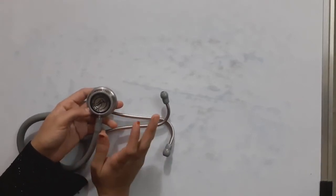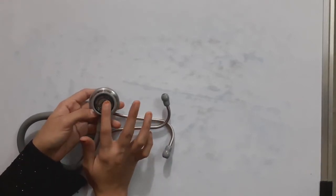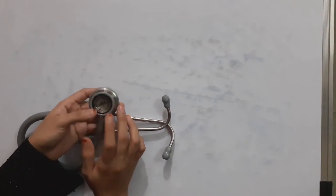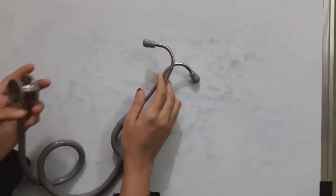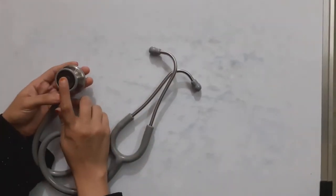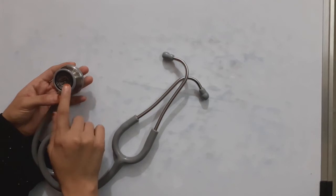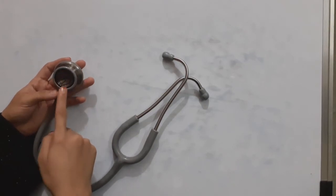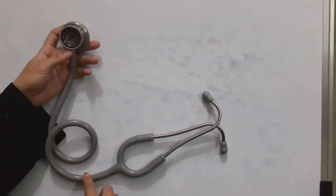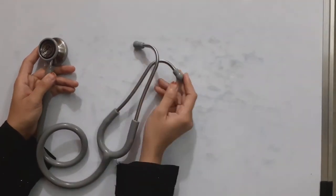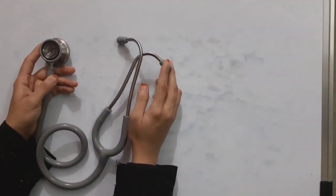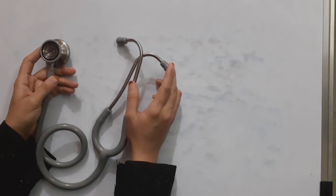For low frequency sounds like fetal heart sounds, we use the bell. Sound transmission occurs from the chest piece via the air-filled rubber tubing to the listener's ear through the ear plugs.